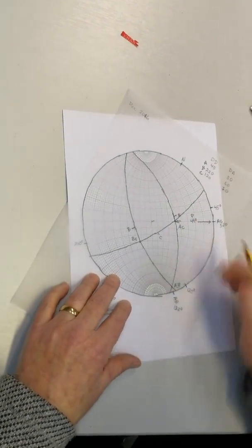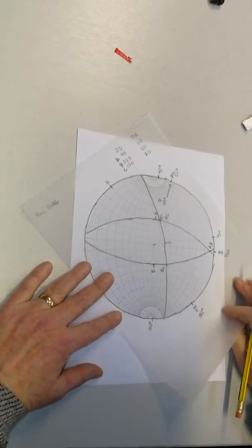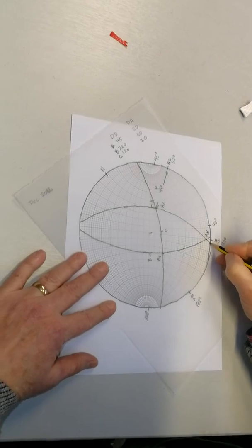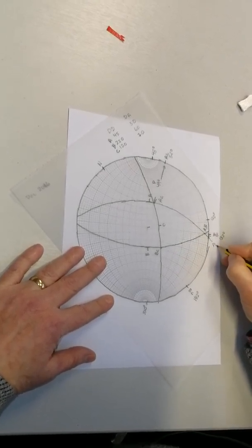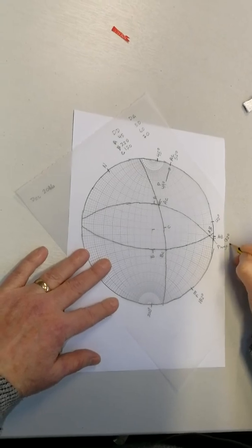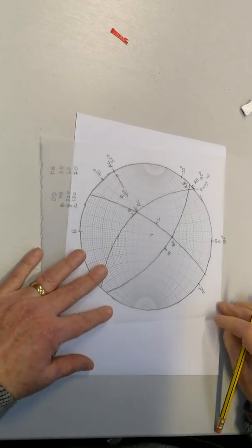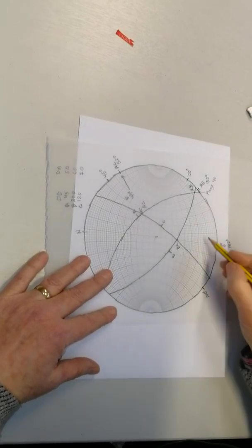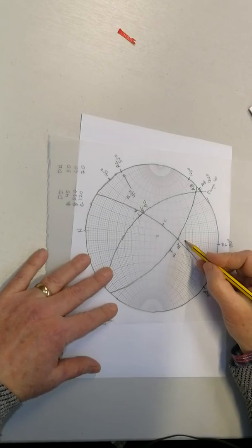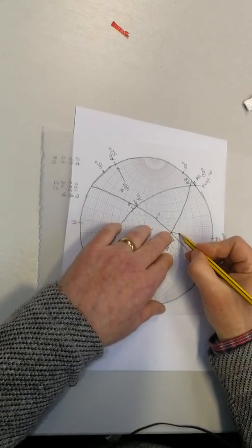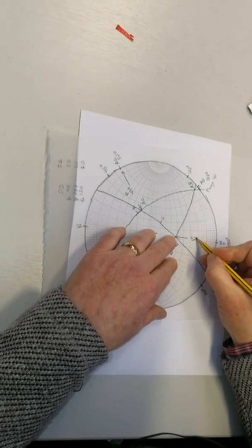For AB, I'm going to bring it over here to the east-west line. That's 2 degrees, 4 degrees. So plunge 4 degrees. And for BC, again I'm on the east-west line. 10 degrees, 20 degrees, 30 degrees, 40 degrees, 50. And then that distance there is 52 degrees.